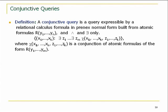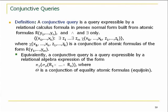Formally, a conjunctive query is a query definable by a formula of first-order logic with very simple syntax: a bunch of existential quantifiers applied to a conjunction of atomic formulas — literally positive atomic formulas. Some variables are quantified out, some are free, and the query returns on every database the set of all k-tuples that satisfy this expression. This is a domain-independent calculus expression, so active domain semantics works perfectly well here.